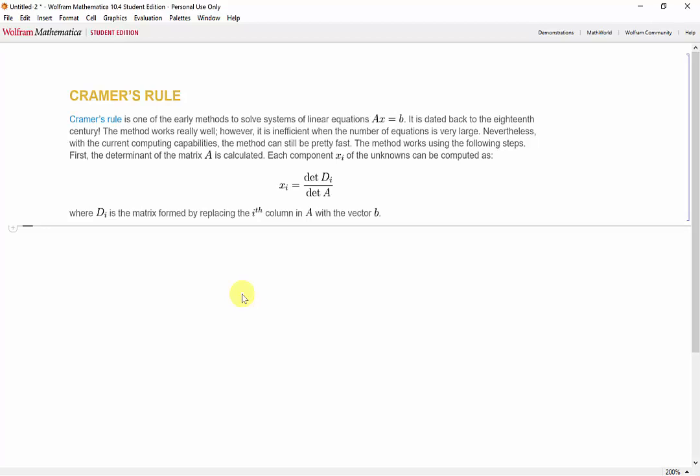We'll start off by defining our function. We'll call it Cramer, and we need to input a matrix A and a vector of the right hand side B.